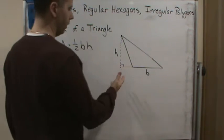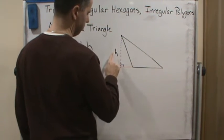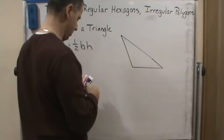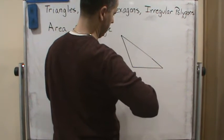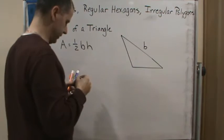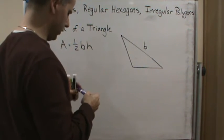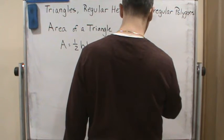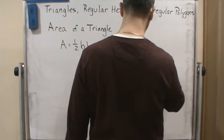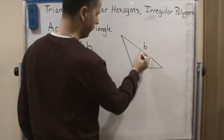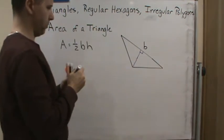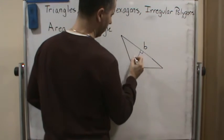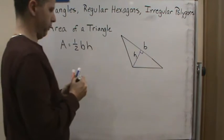Now what if I choose a different side? What if that's the base? Then the height of the triangle would be the altitude from the opposite vertex. And so this would be the height.